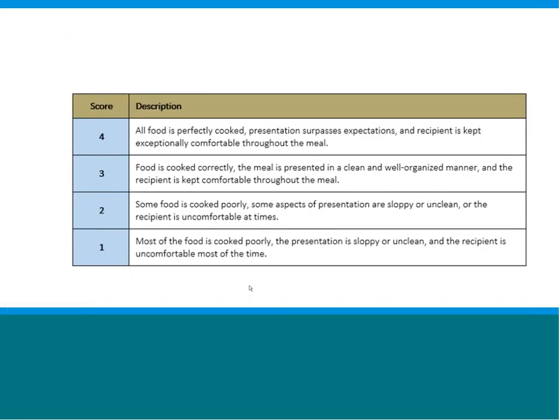I'm going to quickly review the two different types of rubrics commonly used in higher education, then show you how to create a rubric in Canvas and how to add a rubric to an assignment. This is an example of what we would call a holistic rubric — not the most commonly used rubric in higher education, but it is used. Basically you're combining multiple criteria into a single score. For example, if your significant other made you breakfast in bed for Valentine's Day, you could evaluate that breakfast by asking: how was the food, how was the presentation, and were you comfortable during your meal? You can rate those on a scale of one to four.